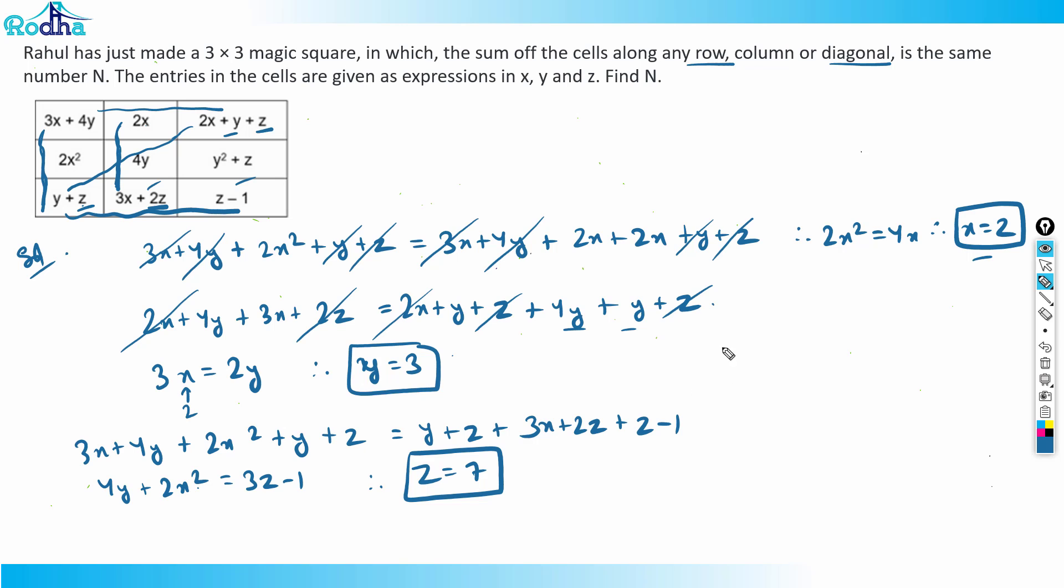7 is the answer for this question. z is 7. So now what I can do is I need to find this value of n here. What is n? So n is the sum along any column. We can just put here. So just try to put z as 7. So this is equal to 8. If you put y equal to 3, 3² is 9 plus 7, 16. And 2x is 4 plus 4 plus y here.